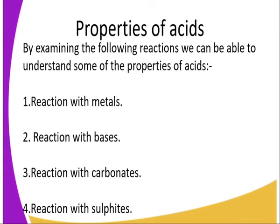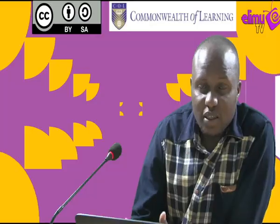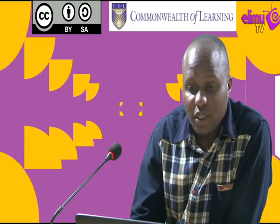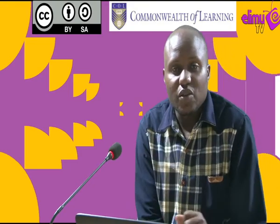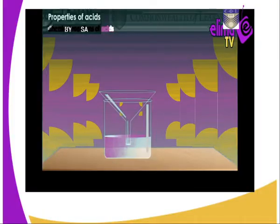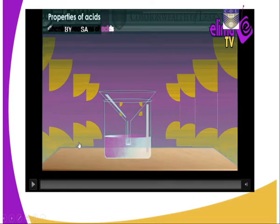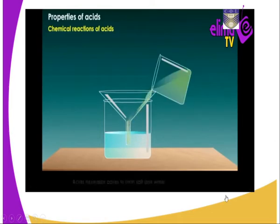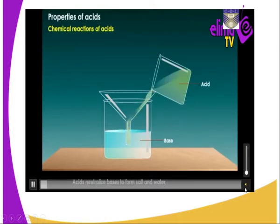So what are some of the properties of acids? By examining the following reactions, we can be able to understand some of the chemical and physical properties of acids. Let's look at the chemical reactions of acids, which occur as a result of the following interactions.